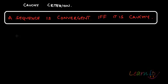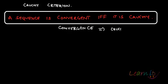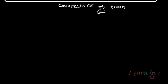The Cauchy criteria for convergence says that a sequence is convergent if and only if it is Cauchy. So basically what we are trying to say is that convergence implies Cauchy and Cauchy implies convergence for any sequence. If you have a convergent sequence that will be Cauchy, and if you have a Cauchy sequence that will be convergent. Let's try to prove it analytically.